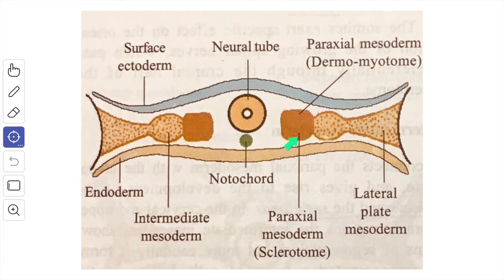A paraxial mesoderm on each side of the notochord and the developing neural tube. Then you have the intermediate mesoderm lying along the floor of the longitudinal groove, and then you have the lateral plate mesoderm which extends up to the periphery of the germ disc and is continuous with the extra-embryonic primary mesoderm.